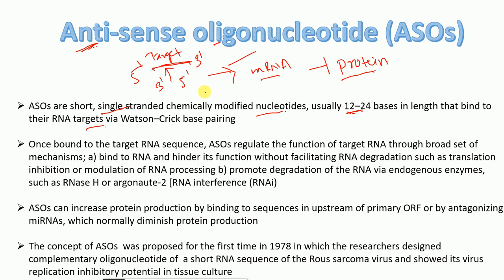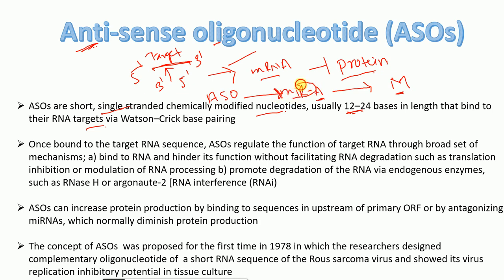Another way antisense oligonucleotides can act to increase mRNA production is by inhibiting microRNAs that target that mRNA. For example, if microRNA-A targets and inhibits mRNA-M, and we design antisense oligonucleotides to inhibit microRNA-A, then the synthesis of mRNA-M will be increased.